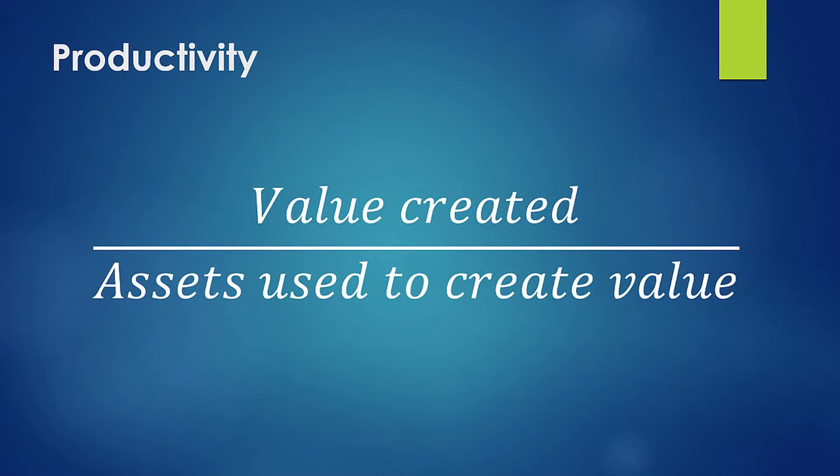There are a couple of different productivity metrics out there, but they all come down to a simple concept: you take the amount of value created compared against the amount of assets it took to create that value. So it's the value created over the assets it took to create that value.